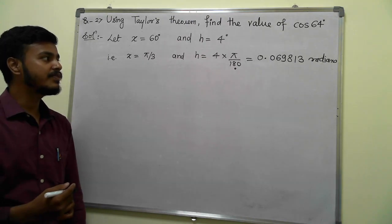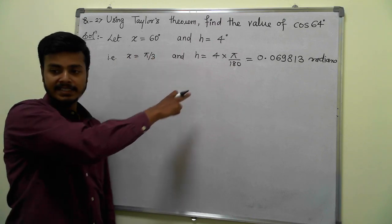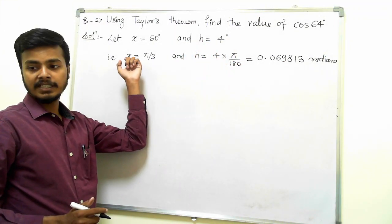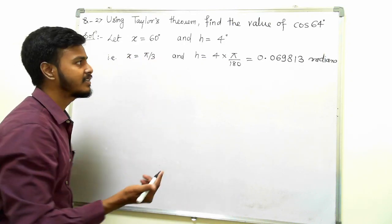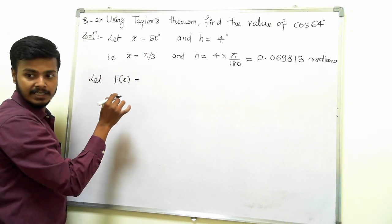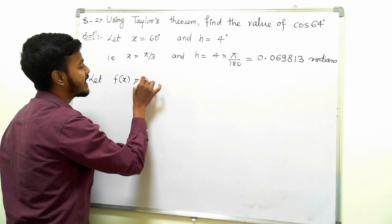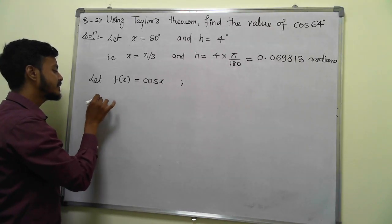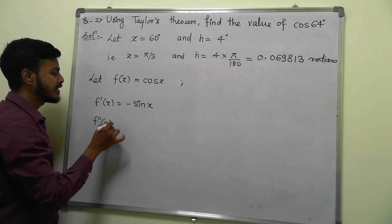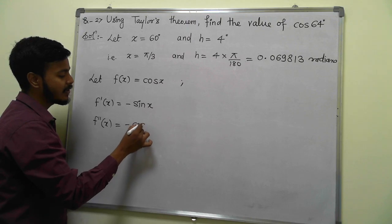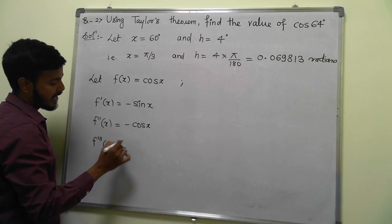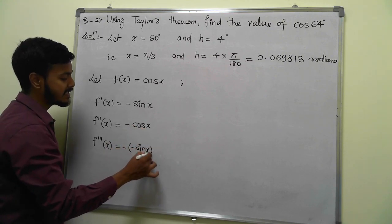As I mentioned in the last video, after identifying x and h, find the derivatives of the function and evaluate them at x = π/3. Let f(x) = cos x. The first derivative f'(x) = −sin x. The second derivative f''(x) = −cos x. The third derivative f'''(x) = −(−sin x) = sin x.